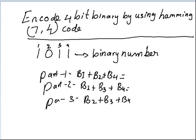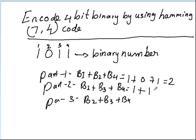For the first parity bit: b1 is 1, b2 is 0, and b4 is 1, so we get 2. For parity bit two: b1 is 1, b3 is 1, and b4 is 1, so we get 3. For parity bit three, we continue similarly.